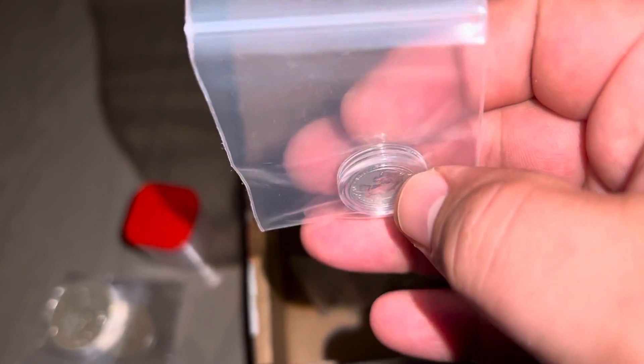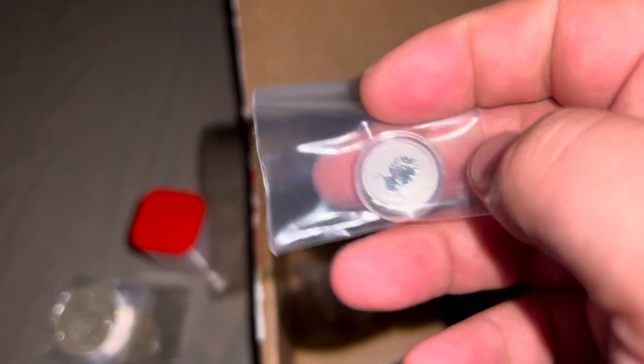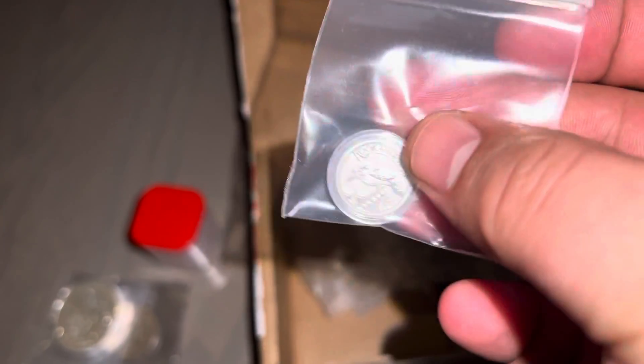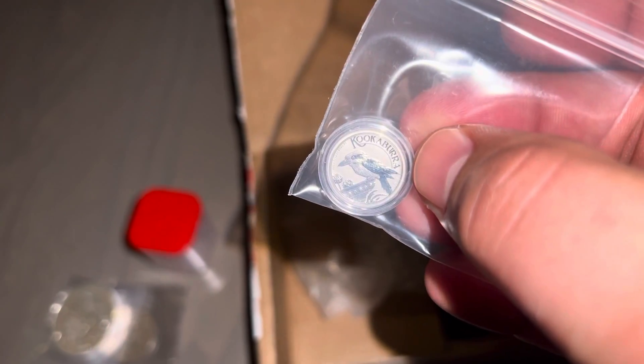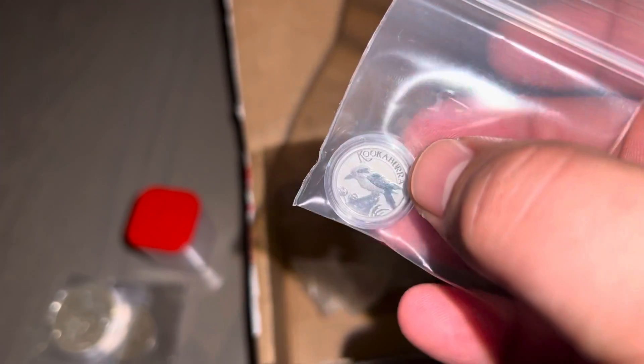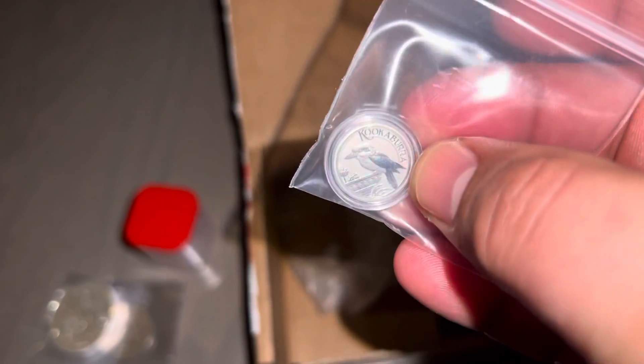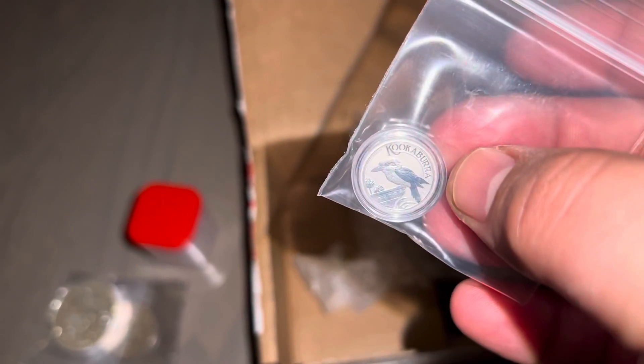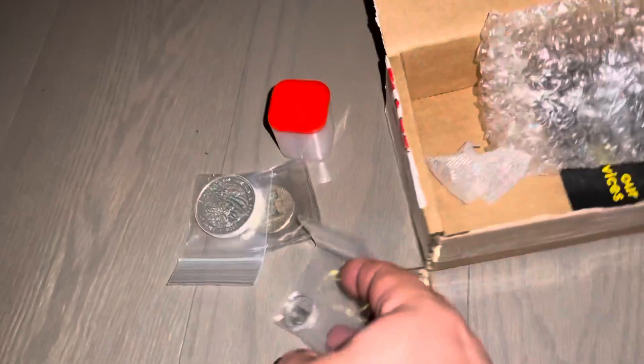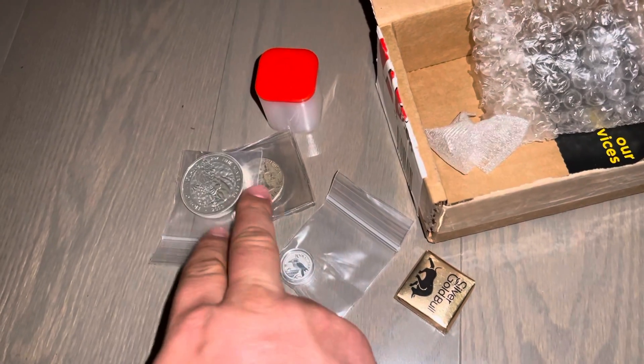But for now I like having a couple of these fractional pieces and I just like the Kookaburra. So I have a gold Kookaburra one-tenth ounce, silver Kookaburra one ounce, many of those, and this one-tenth ounce platinum Kookaburra. So there you have it, that's all I picked up in this order. As I said, very small.